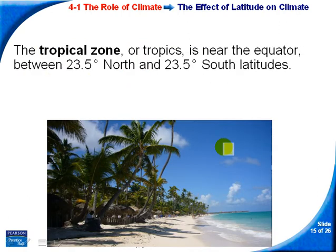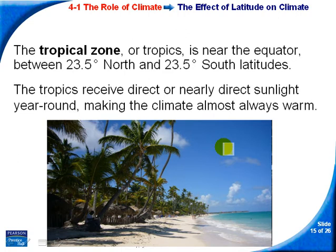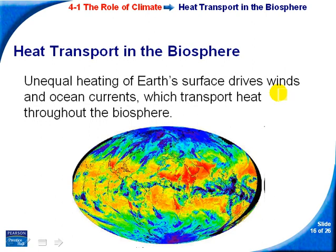The tropical zone is near the equator and receives direct or nearly direct sunlight year round, making it always warm. Because the Earth has both land masses and bodies of water, there is unequal heating across the globe throughout the year, and this ends up causing winds and ocean currents, which transport heat throughout the entire biosphere.